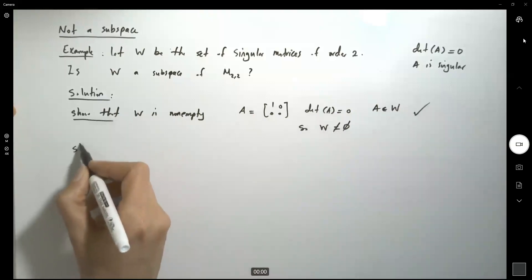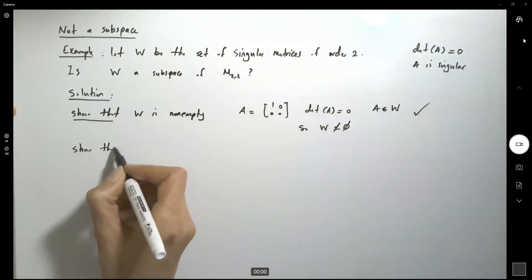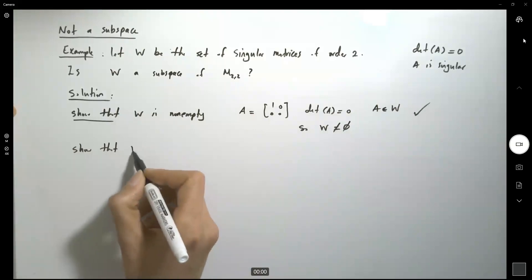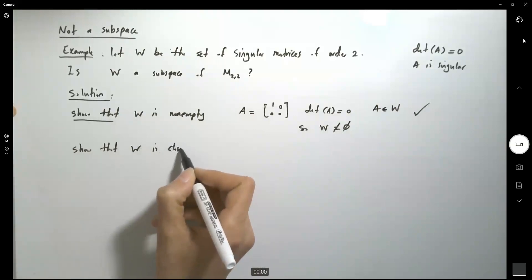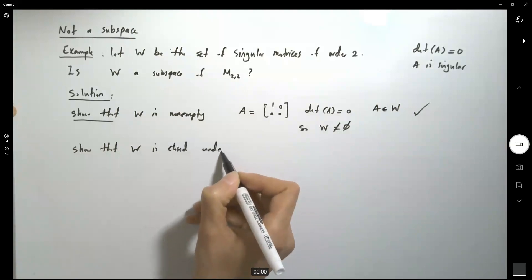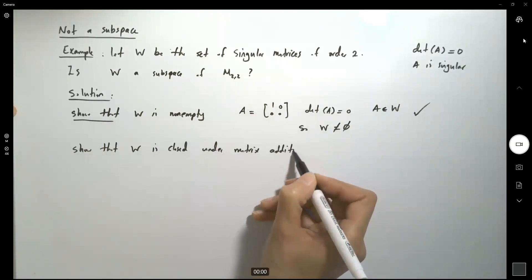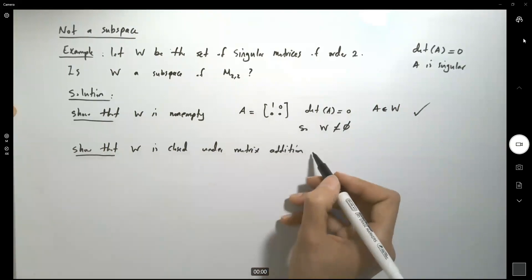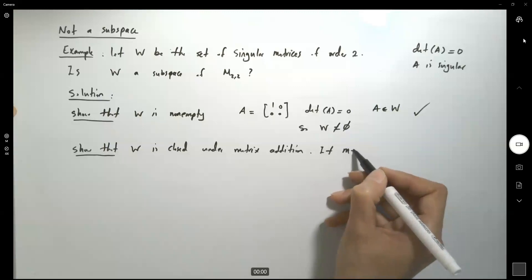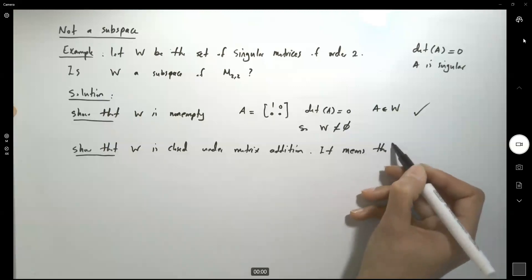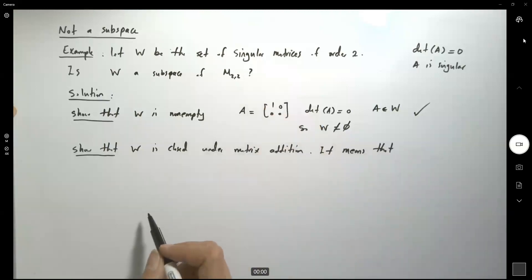Now we need to show that it is closed under matrix addition. What's the meaning of that? It means that if I take two singular matrices,